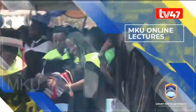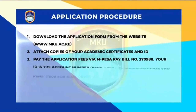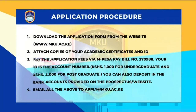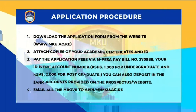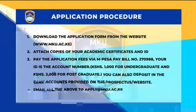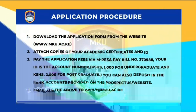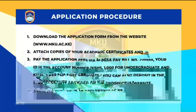We are in a digital era and Mount Kenya University knows this. The following are the steps to complete your online application: download the application form from the website www.mku.ac.ke, attach copies of your academic certificates and ID, pay the application fees via M-PESA paybill number 270988 — your ID is the account number, and 2,000 shillings is the charge for a postgraduate. You can also deposit in the bank accounts provided on the website, then email all the above to apply at mku.ac.ke.